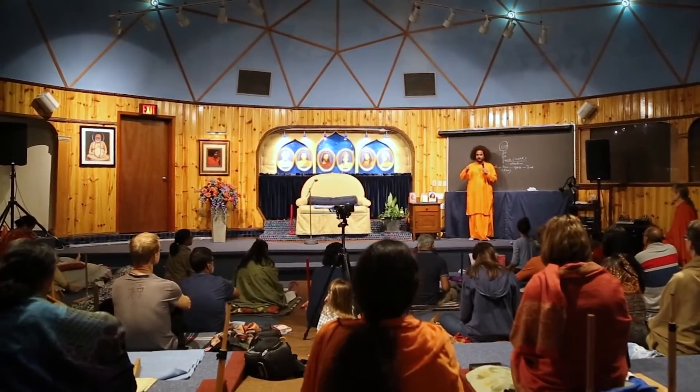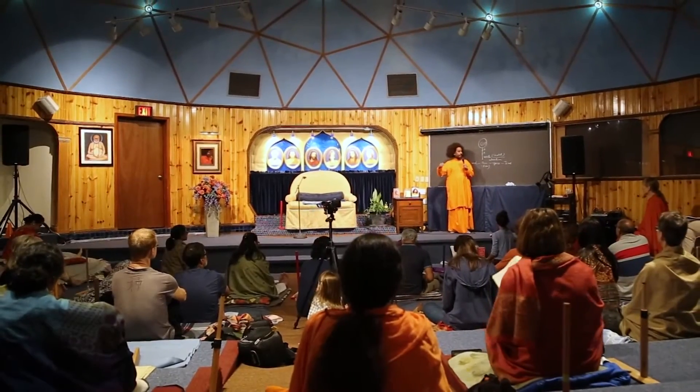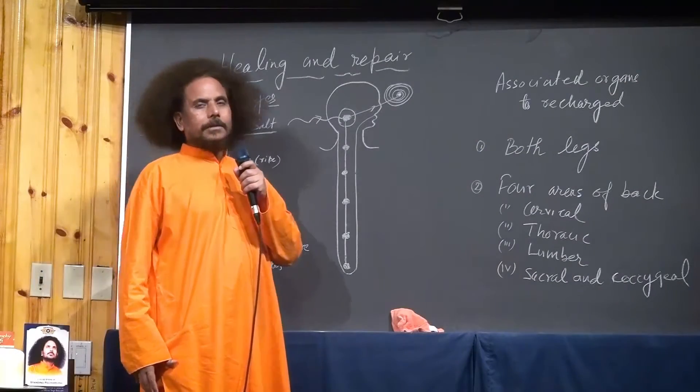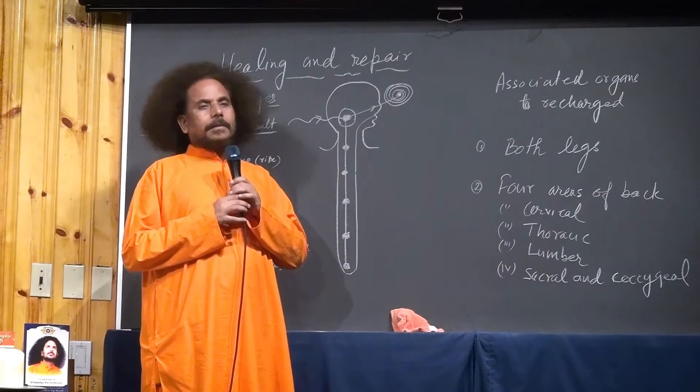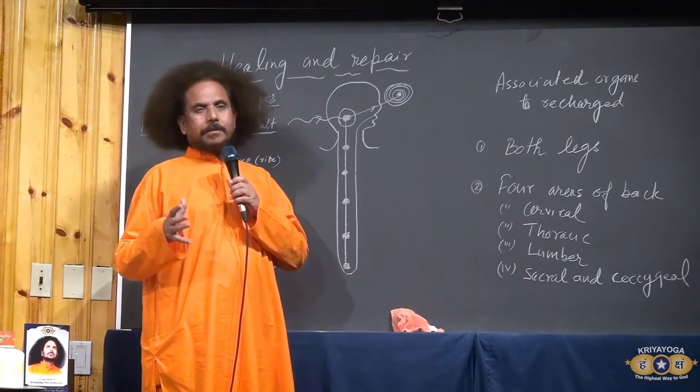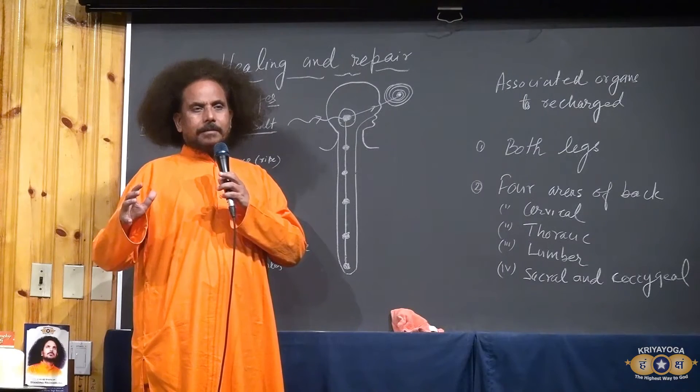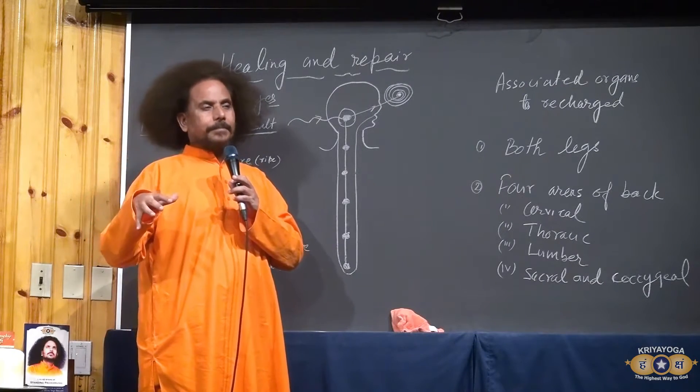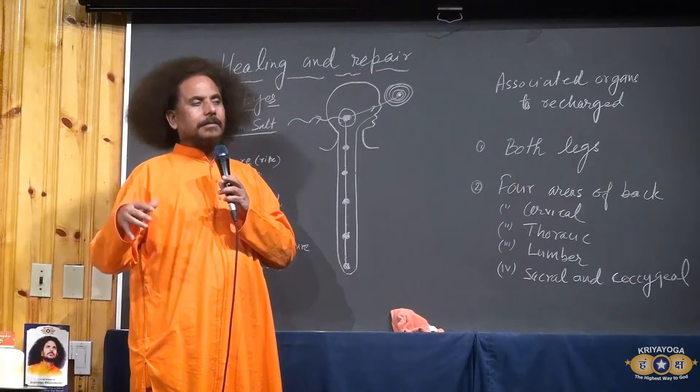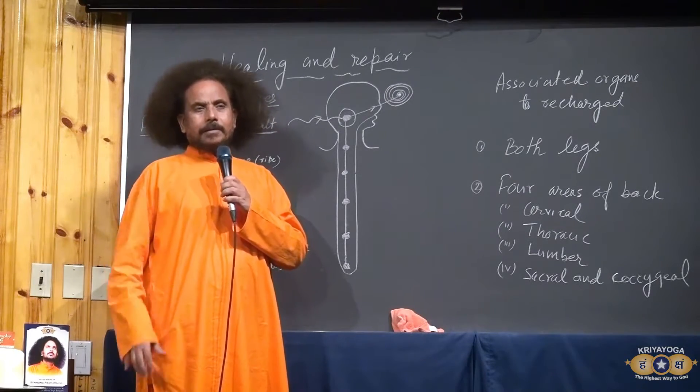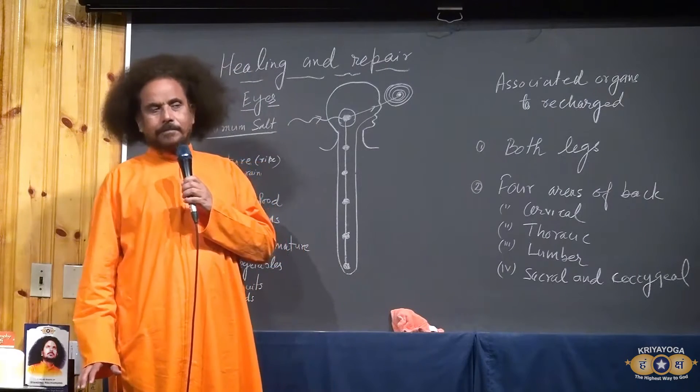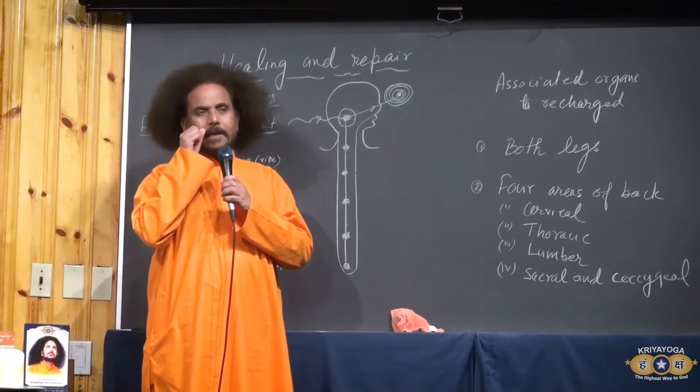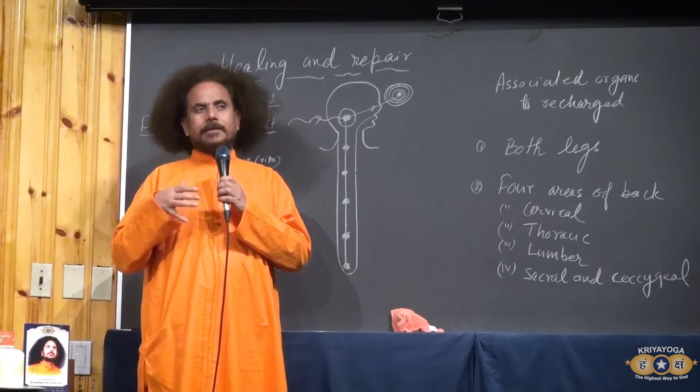Today we are going to learn how to understand healing and repair process, and how to do it. Each and every creation, the cosmos, they are having healing power inside. The life of the earth, this earth is getting healed by itself, and all the cosmic creation they help. Sun and other stars, all are helping how to maintain existence of solar system. Exactly in the same way, each and every animal and plant is having the self-healing process.